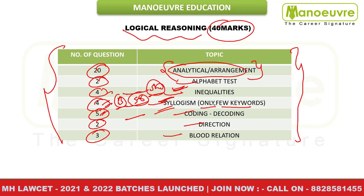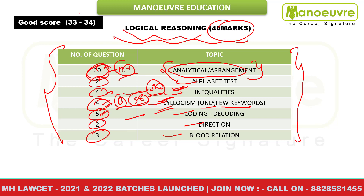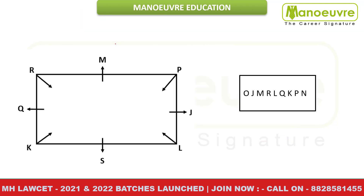The arrangement in the actual exam was quite easy level. All 20 arrangement questions took me around 12 minutes. So about this section, I will not be surprised if somebody gets full marks. But a good score for this section is nothing but 33 to 34. And this is the question which was asked — ek rectangle diya tha, with 8 people sitting.